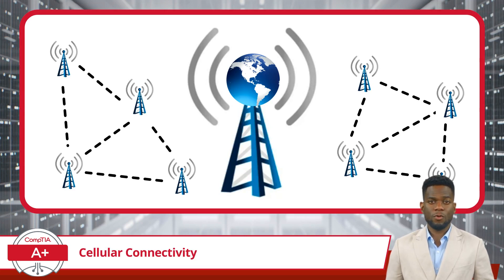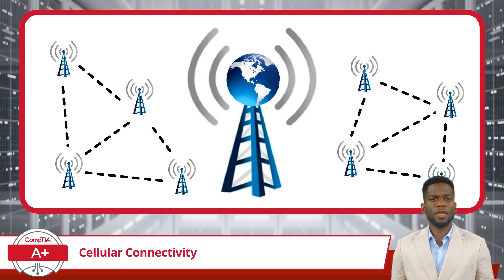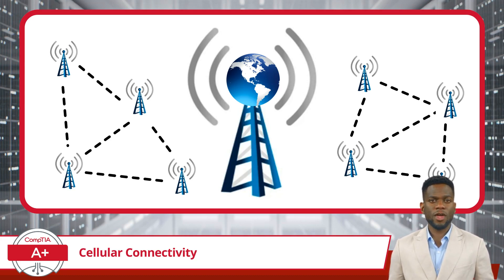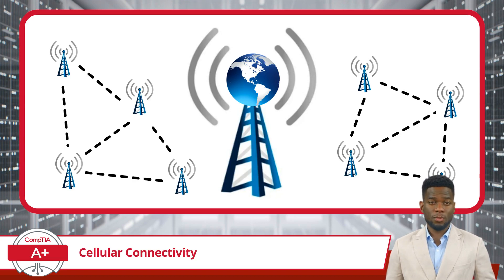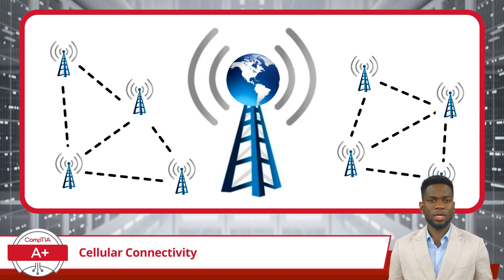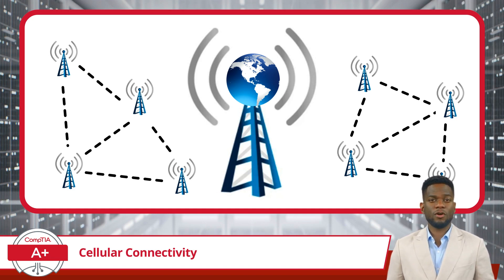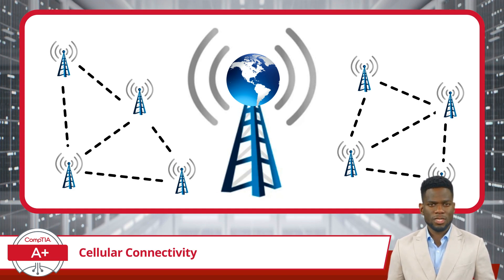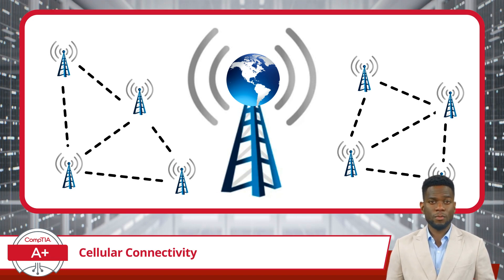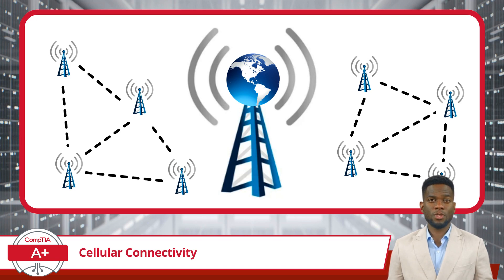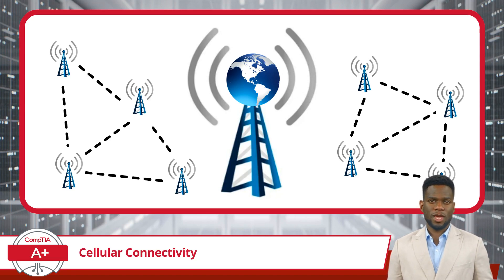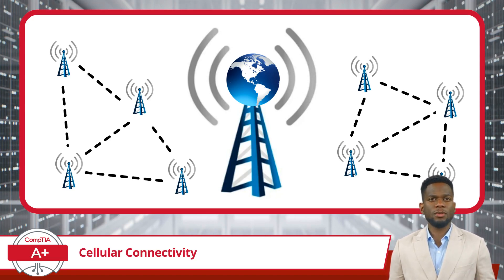Cellular connectivity refers to the technology that allows mobile phones and other mobile devices to communicate over long distances without wires. It employs a complex system of radio waves transmitted by cell towers strategically placed to cover as much geographical area as possible. When you make a call, send a text, or use your mobile data to browse the internet, your device sends and receives signals to and from these towers. This technology operates on various frequencies and channels, carefully managed to allow numerous people to use their phones simultaneously without interference. It's a dynamic and robust system that seamlessly hands off your connection from one cell tower to another as you move, maintaining a continuous link.